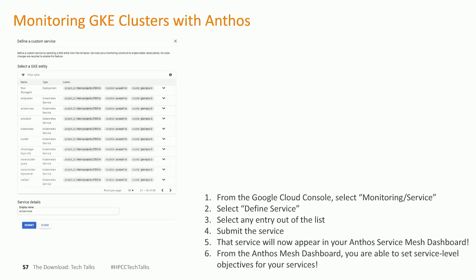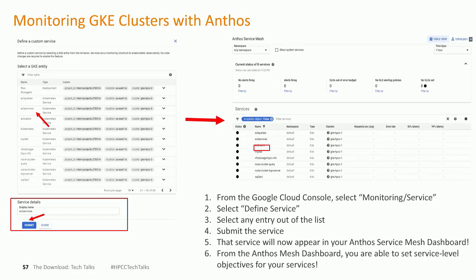Google provides a vast array of options for monitoring GKE clusters. One of the more popular ways is through Anthos Service Mesh, where you are not limited to default listed services — you can choose your own services to monitor. To monitor a custom service: first, from the Google Cloud Console select Monitoring and Service; next, select Define Service; third, select any entry out of the list. For this example, I selected ECL Services, submitted the service, and once you navigate to your Anthos Service Mesh Dashboard, you can see ECL Services appear. From this point, you can set your own service-level objectives for any service you like.